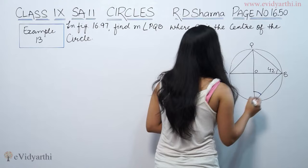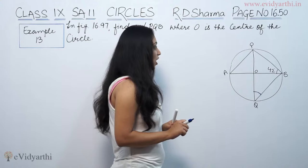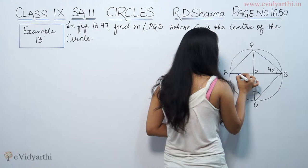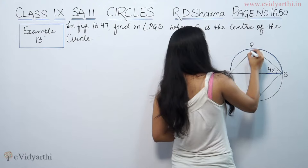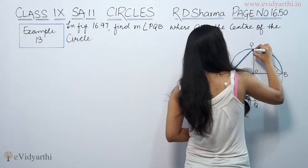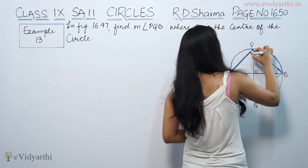If O is the center of the circle — the center is given as O — we can see that this is the diameter of the circle. This diameter means that this portion is a semicircle. Since it is a semicircle, the angle in a semicircle is a right angle — 90 degrees — at angle P.